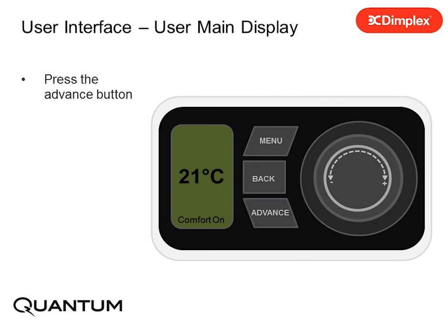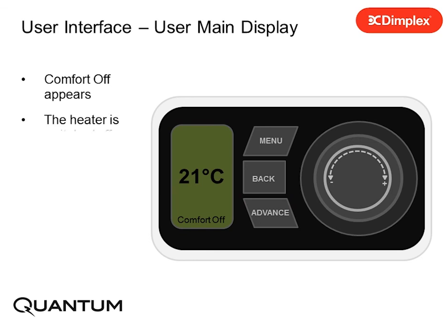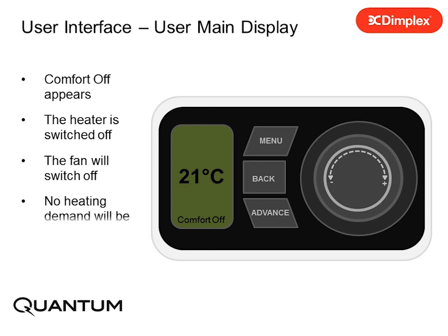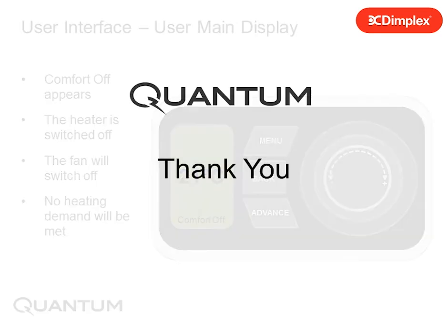Press the Advance button. The comfort state changes. Comfort is off. The heater is switched off. The fan will switch off and no heating demand will be met.